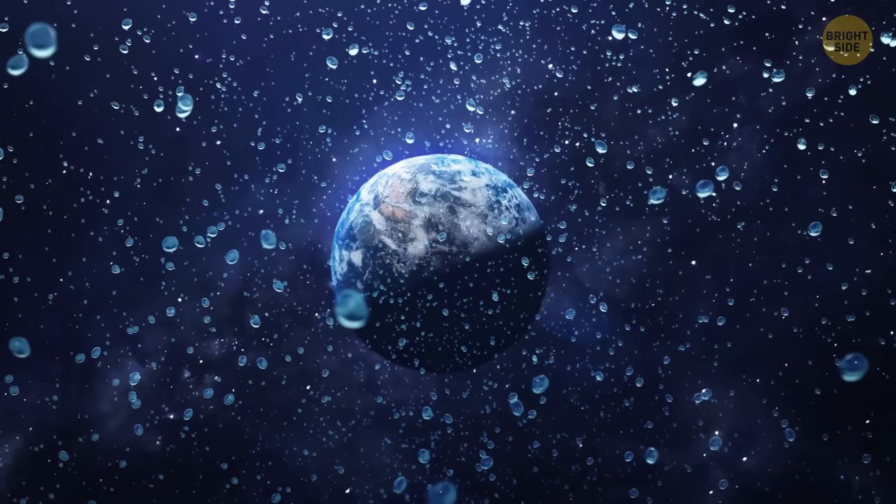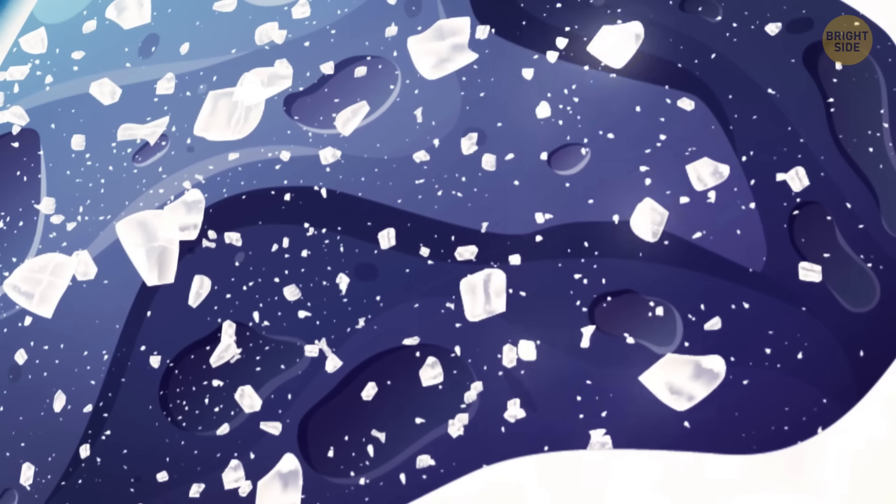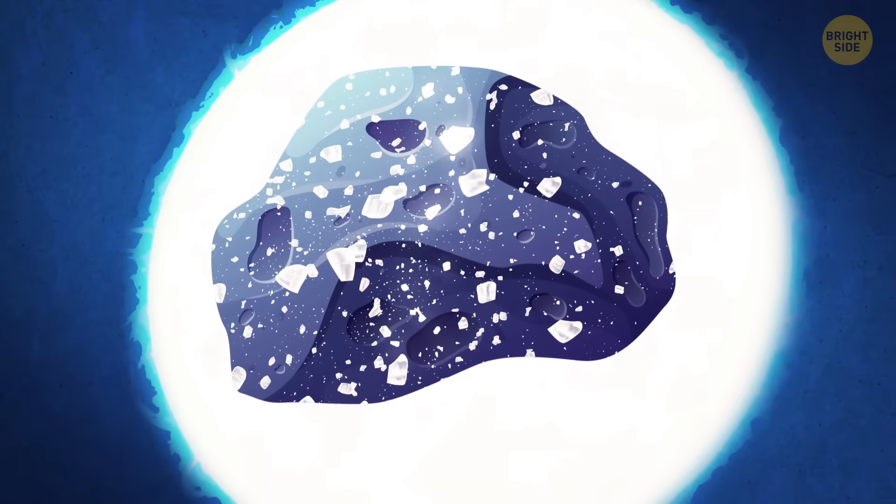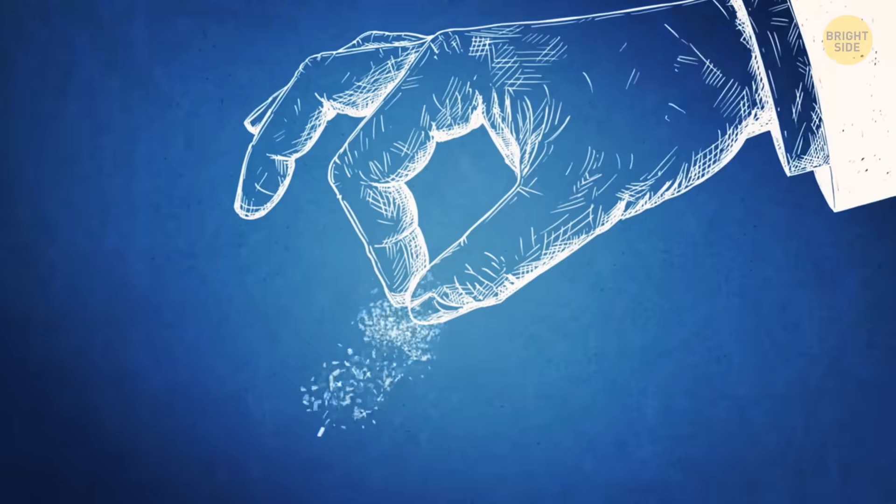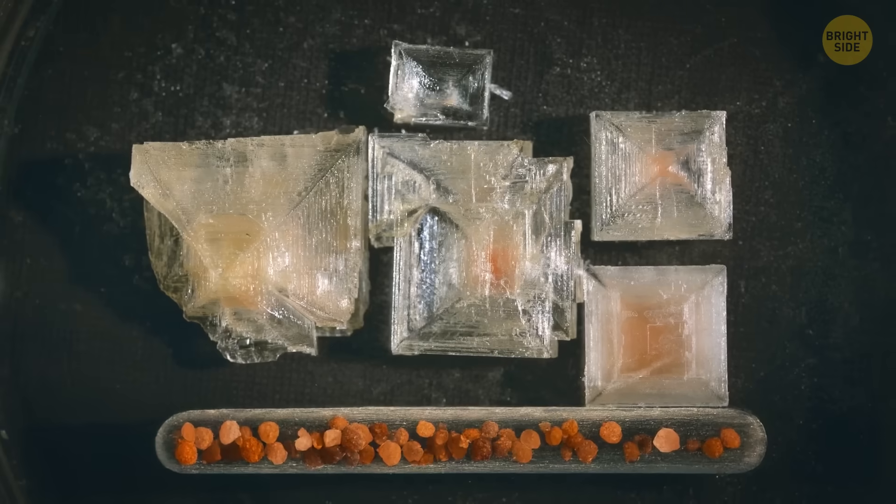But that's not all. There's another salty discovery about water. Scientists found itty-bitty grains of salt in an asteroid. These salt crystals are definitely from space and look just like the ones in your kitchen, only super tiny.